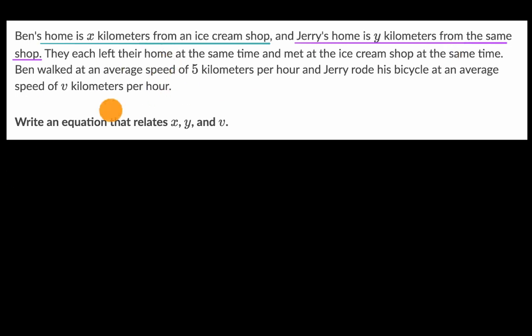Ben walked at an average speed of five kilometers per hour, and Jerry rode his bicycle at an average speed of V kilometers per hour. Write an equation that relates X, Y, and V. Pause this video and see if you can do that.